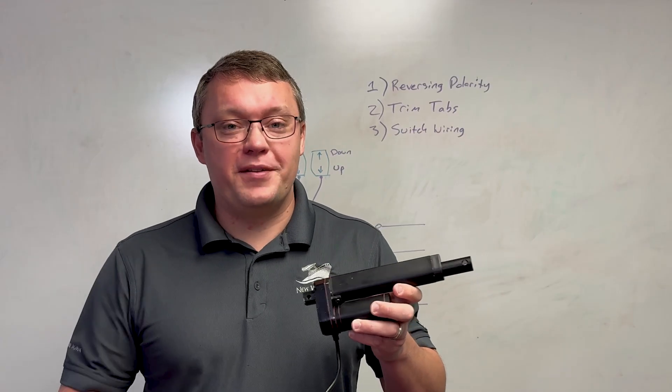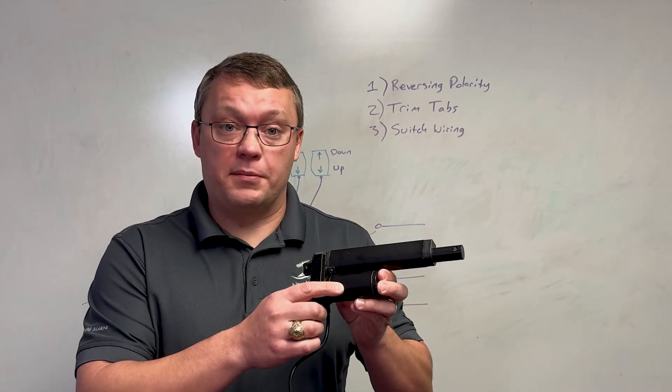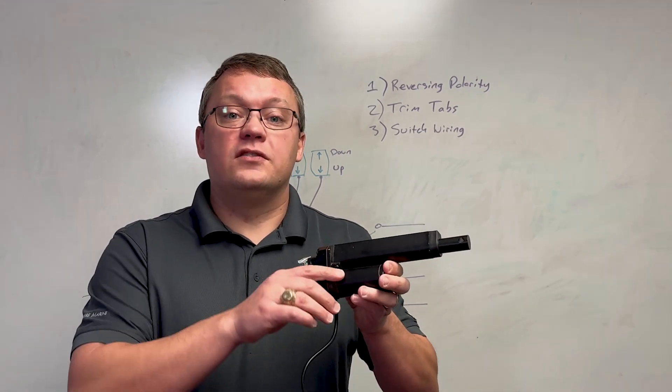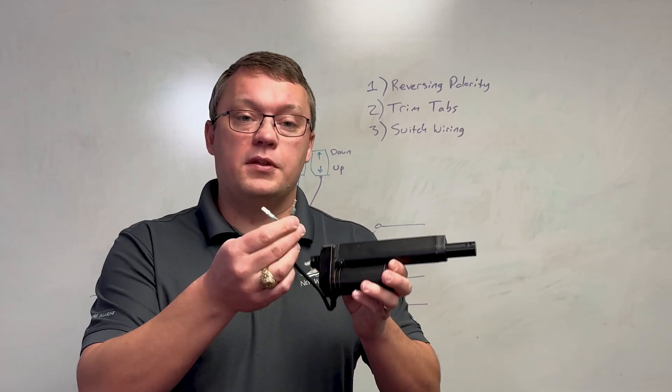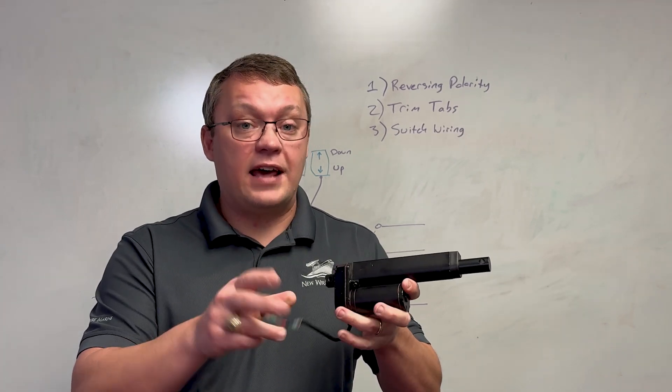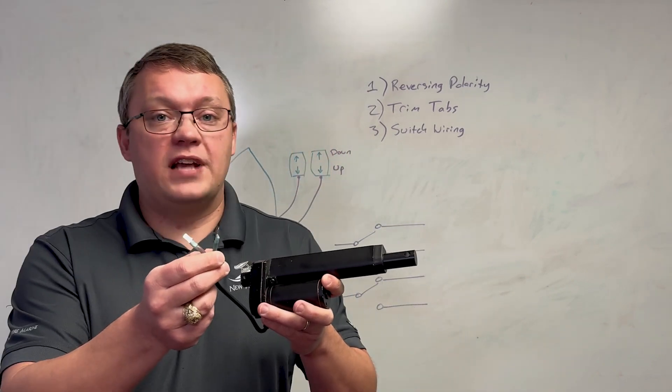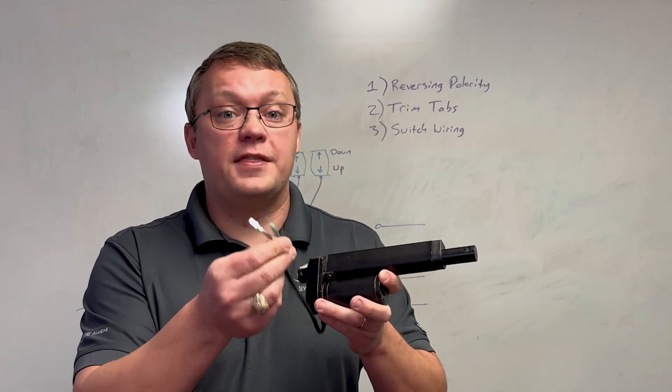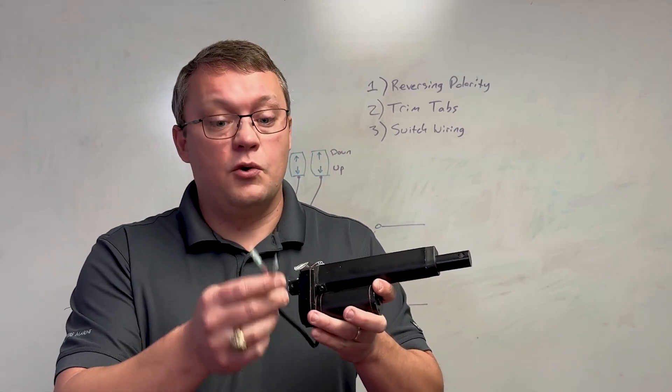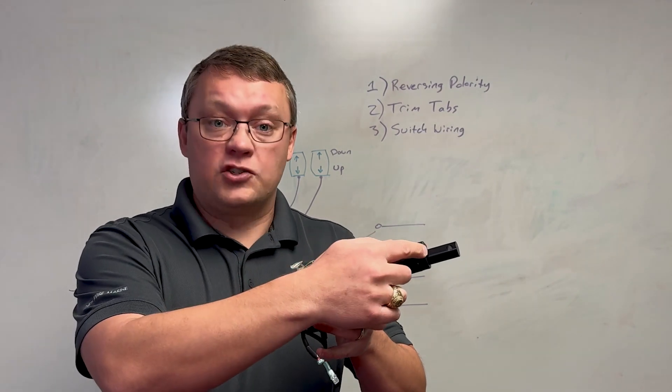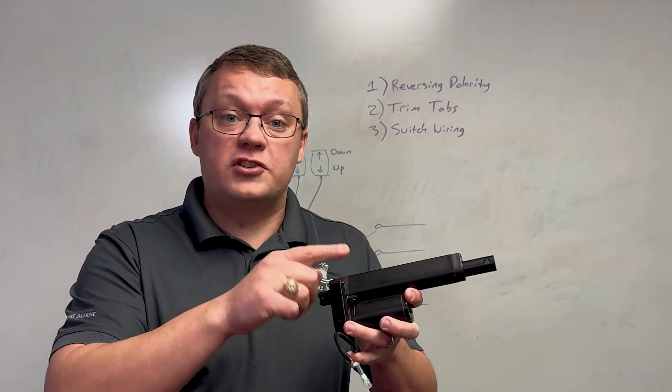Now what makes electric trim tabs work is a linear actuator driven by an electric motor. That electric motor spins one way or the other depending on the polarity of its inputs. It has two input wires and neither is necessarily positive or negative. They switch, that's what reversing polarity is. When it's in one direction the actuator moves inward, when it's in the other direction it moves outward.